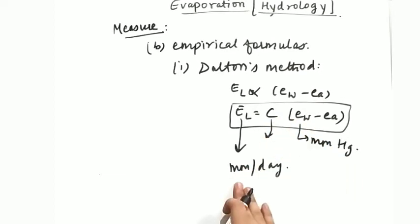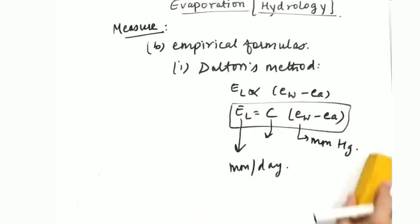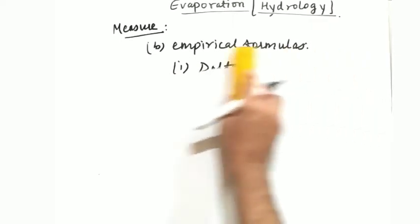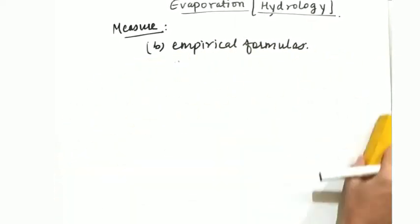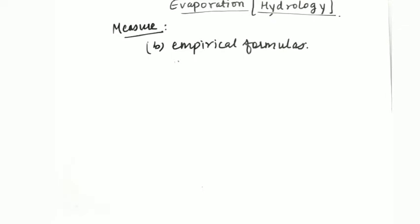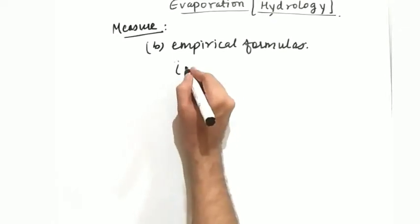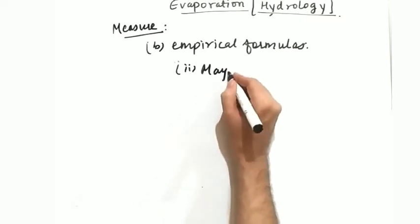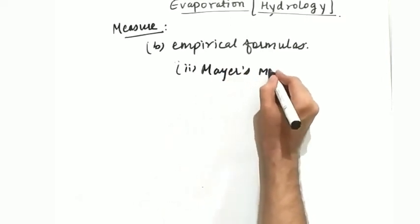So the EL will be in millimeters per day. Now the second method is the most important method, or the only possibility from where the numericals will be framed in the coming gate examinations, and that is the Mayer's method. Mayer's method. What is the Mayer's method?